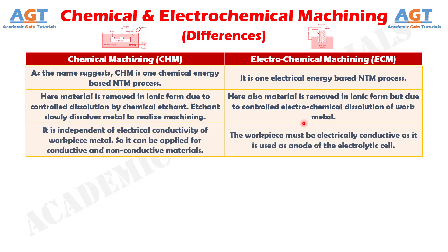Difference No. 3: Chemical machining is independent of the electrical conductivity of the workpiece metal, so it can be applied for both conductive and non-conductive materials, whereas in electrochemical machining, the workpiece must be electrically conductive as it is used as the anode of the electrolytic cell.